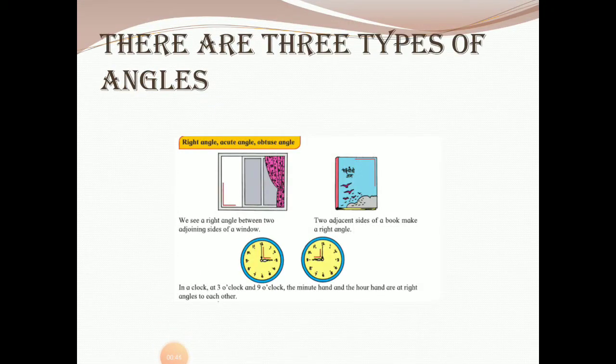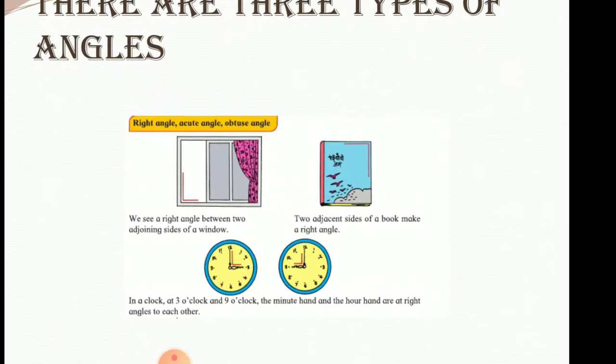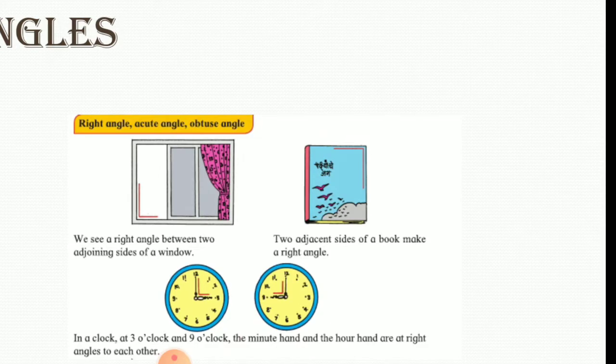Now as we have all revised, we know that there are three types of angles. Those three types of angles are right angle, acute angle, and obtuse angle.